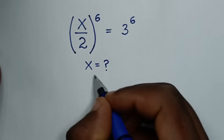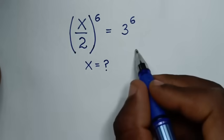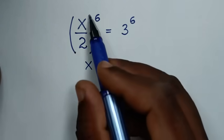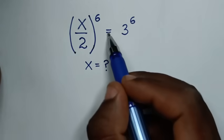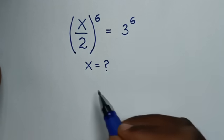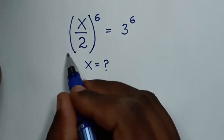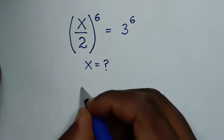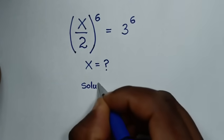Hello, you are welcome to solve this math problem which is (x over 2) bracket to the power of 6, is equal to 3 to the power of 6, to find the values of x from this equation. Now, solution.